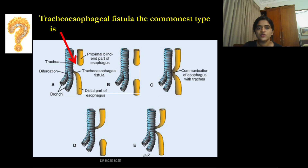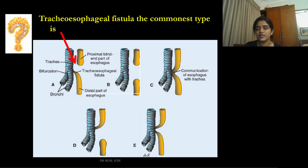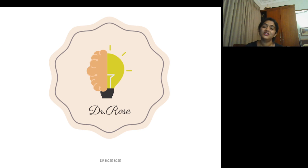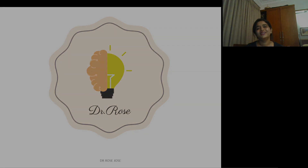The commonest type of tracheoesophageal fistula is where the proximal end of the esophagus is blind and the distal end makes a communication with the trachea. That covers the development of the respiratory system in a nutshell. Thanks for watching.